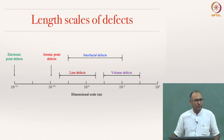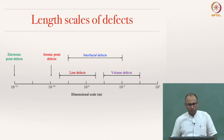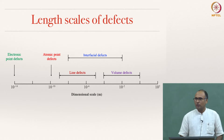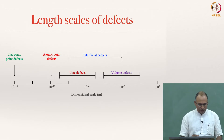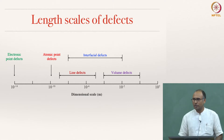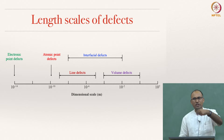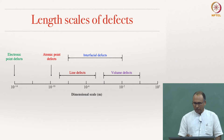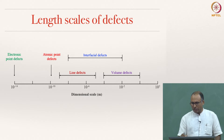We have looked at point defects and discussed different kinds of defects. There are subatomic defects — electronic point defects — where an electron is missing in the material. There are also atomic point defects, where an atom is present or absent or in a wrong position. This is the zero-dimensional defect. Then there is a line defect, which is a 1D defect, interfacial defects which are 2D, and volume defects which are 3D.